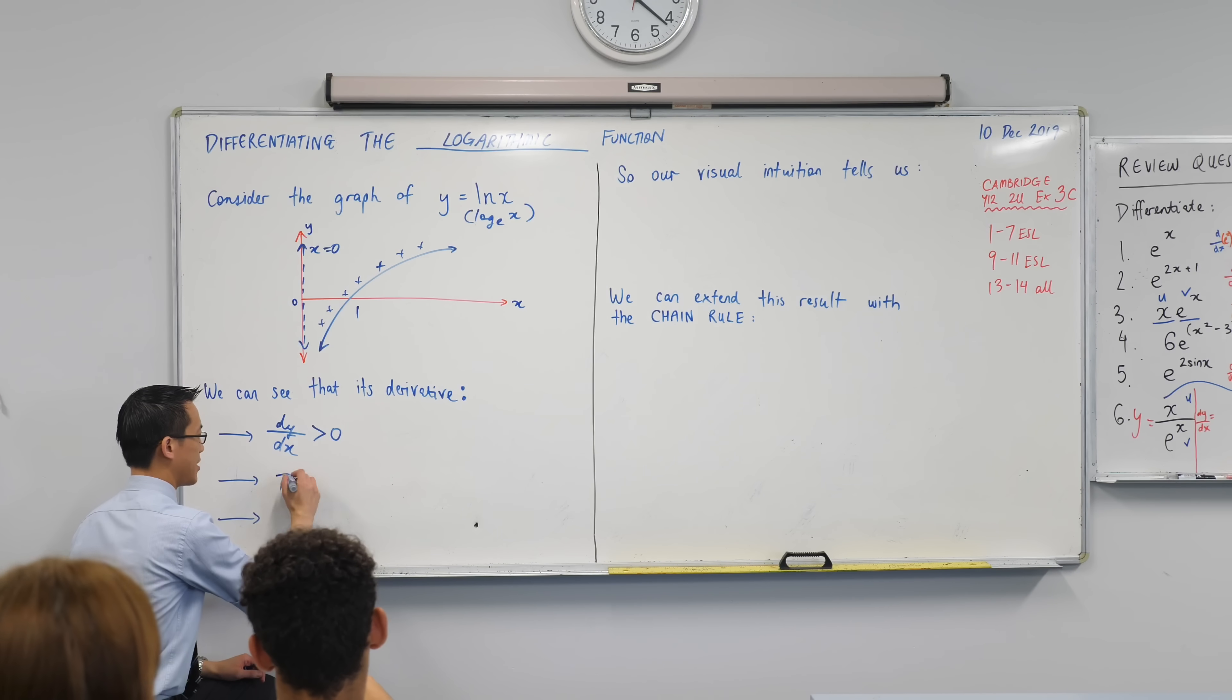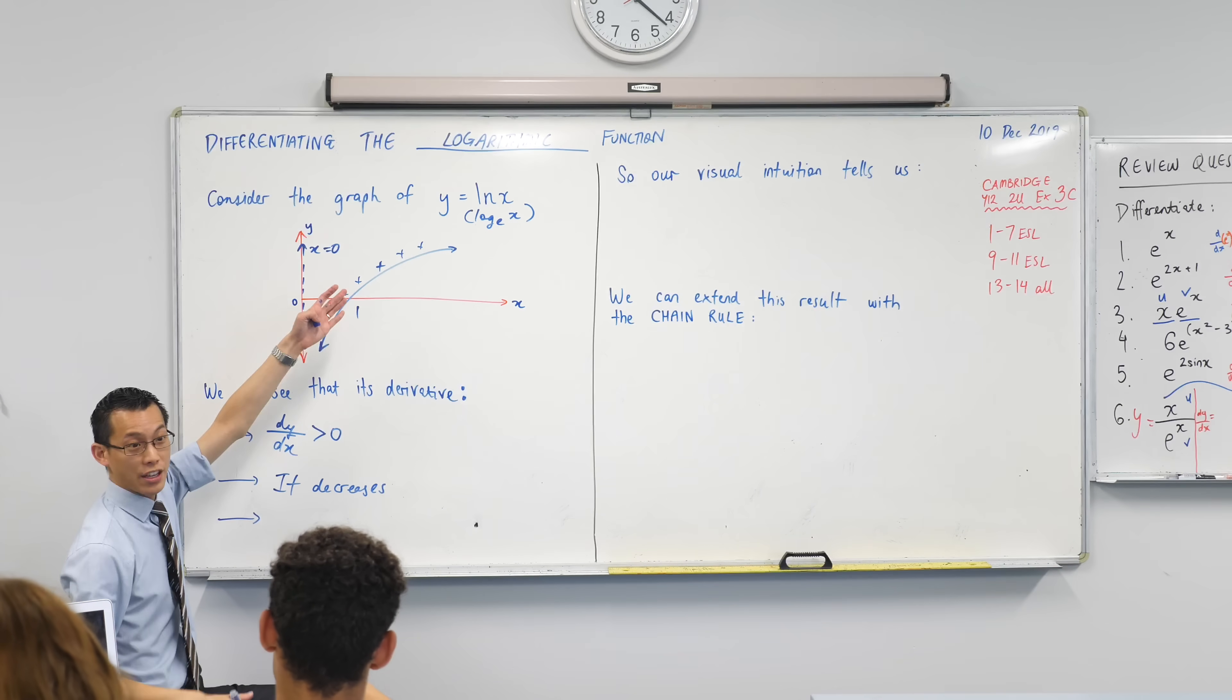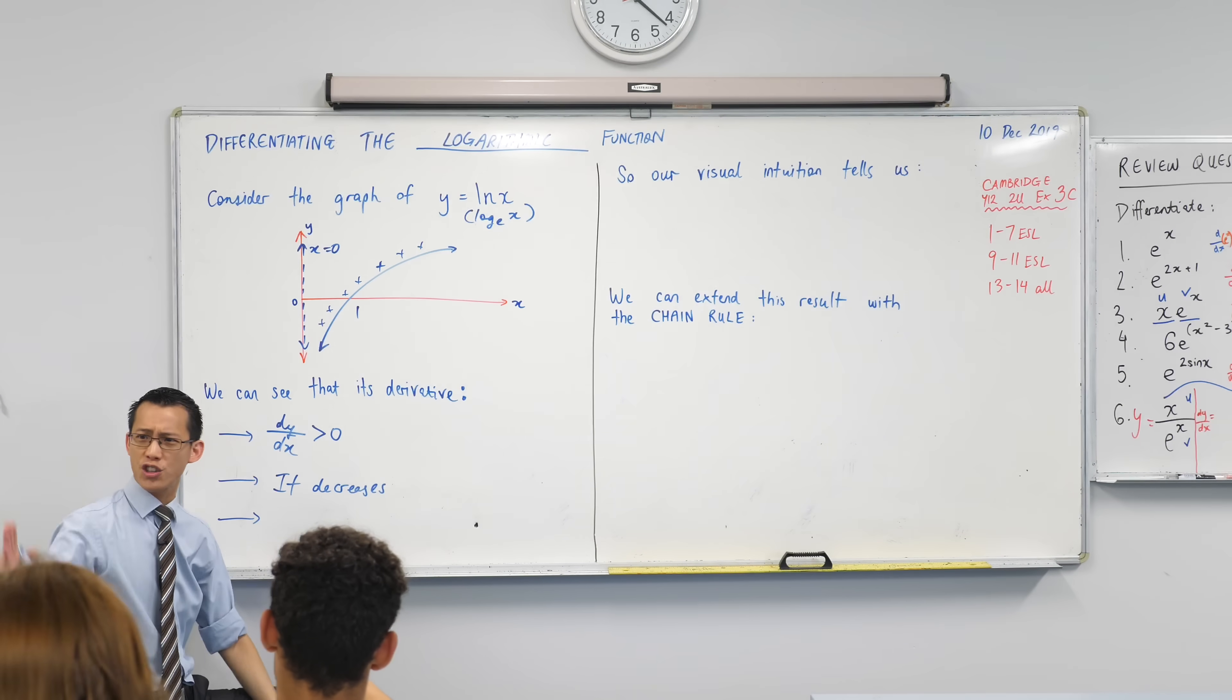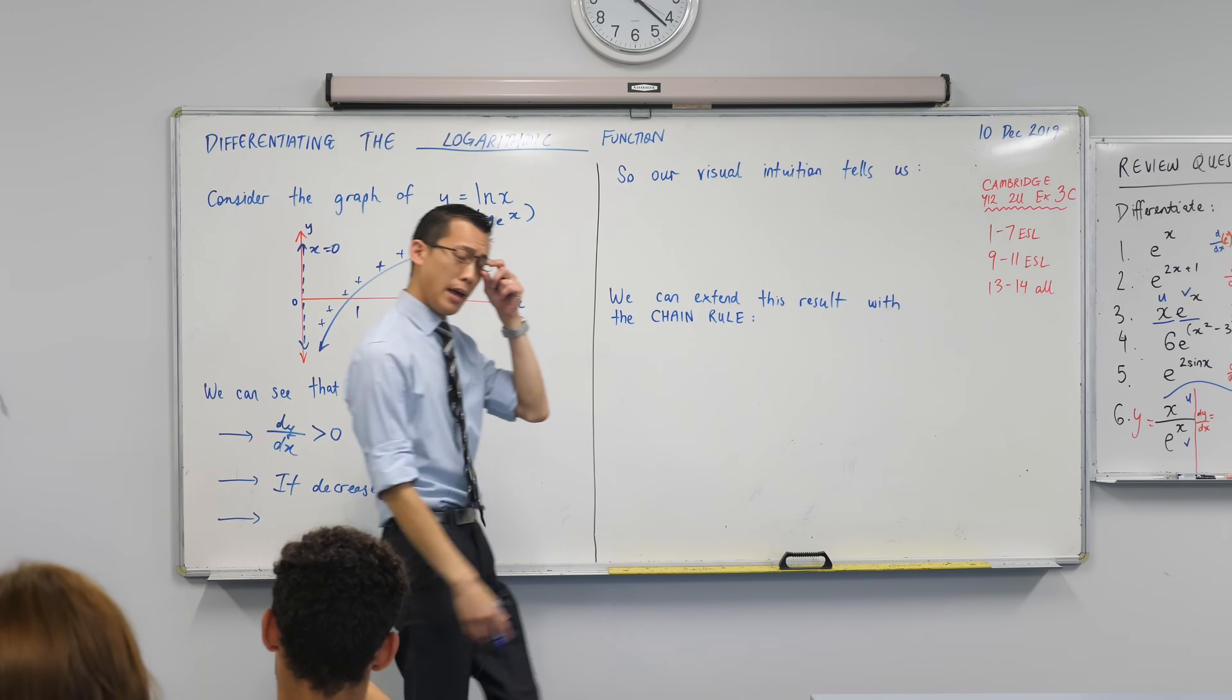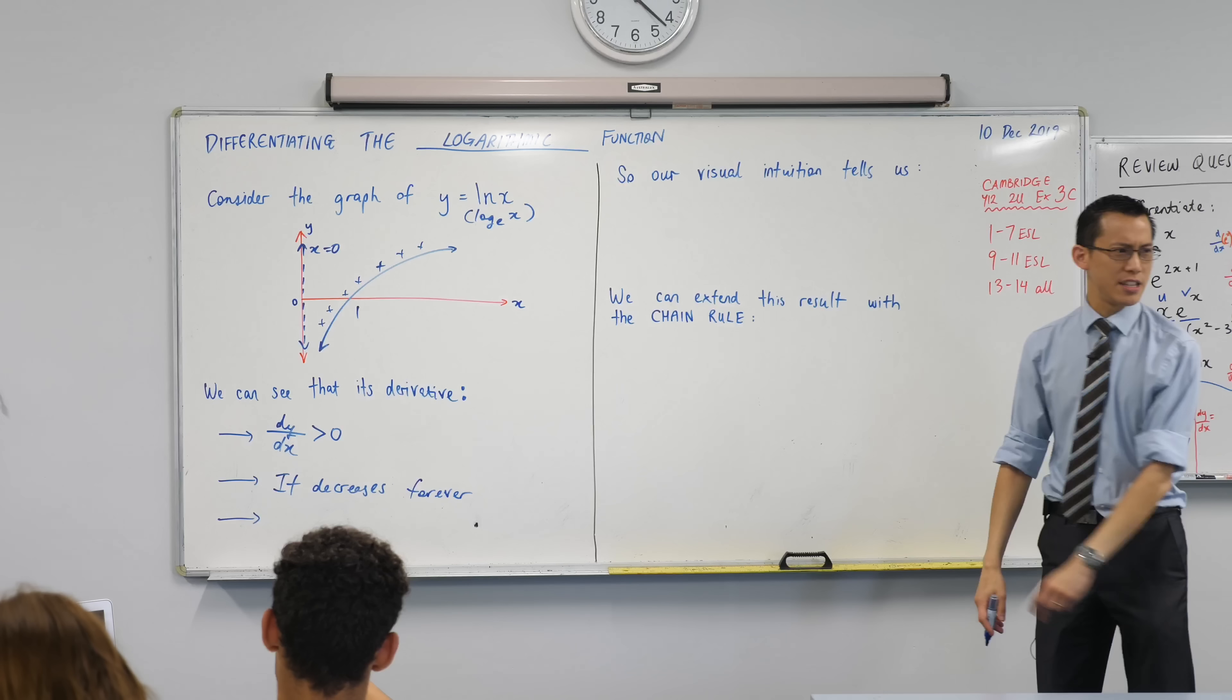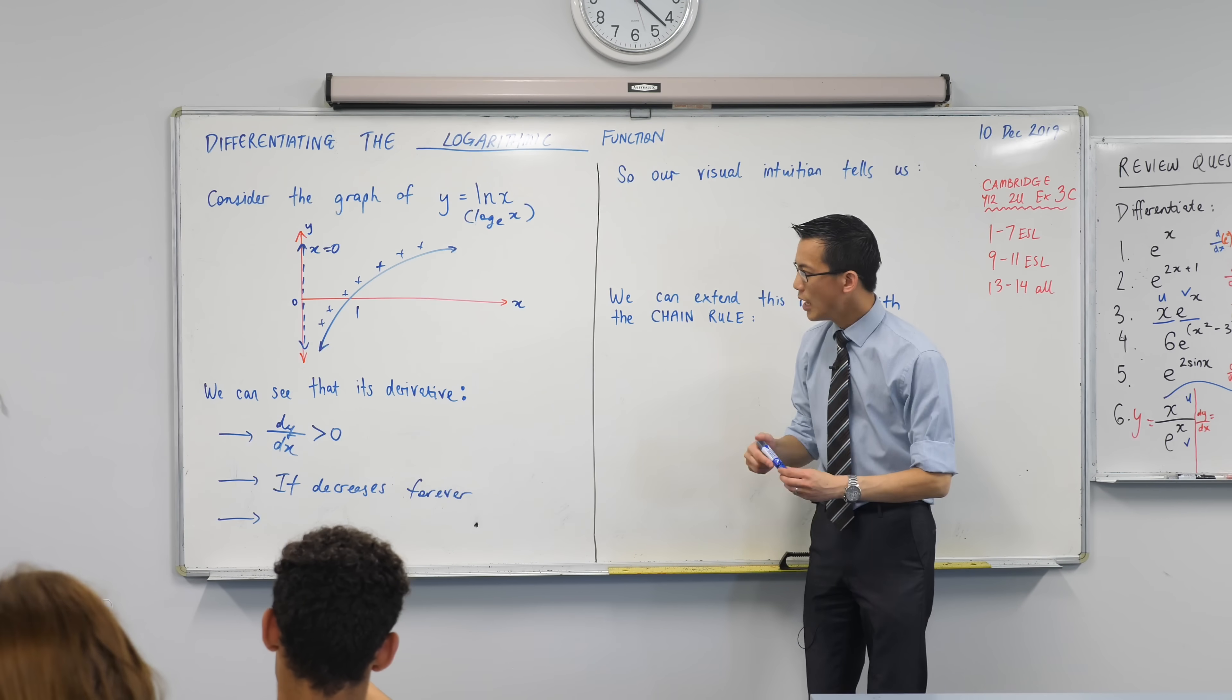Now what that means is the derivative decreases, it gets smaller and it does that forever and ever. You know the x cubed graph which sort of picks up? This never picks up. So it's going to decrease forever. It's going to get smaller and smaller and smaller. It's going to get closer and closer to zero. It's never going to pass zero though because as you told me, it's greater than zero.